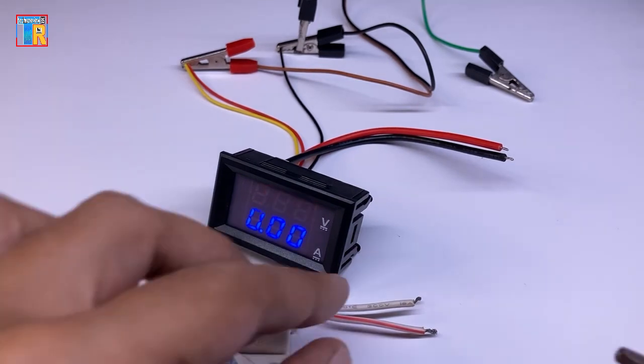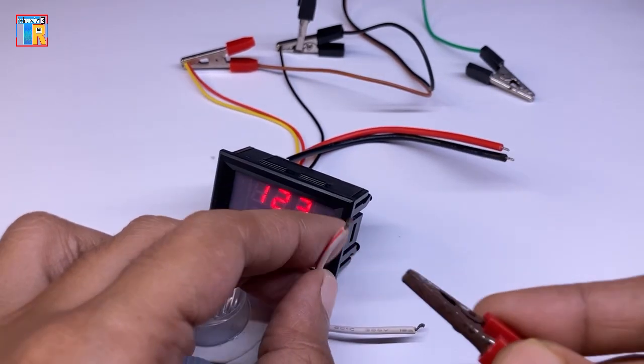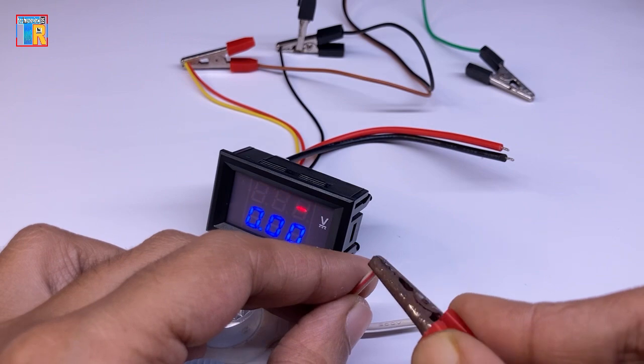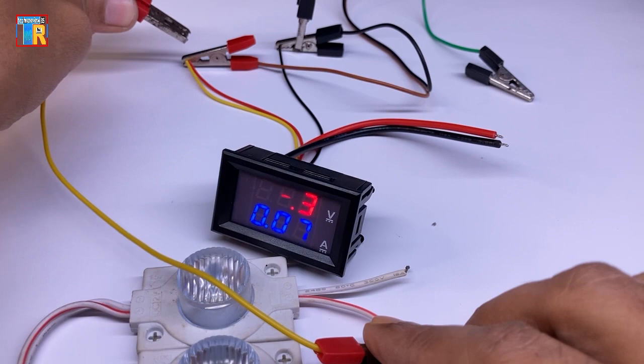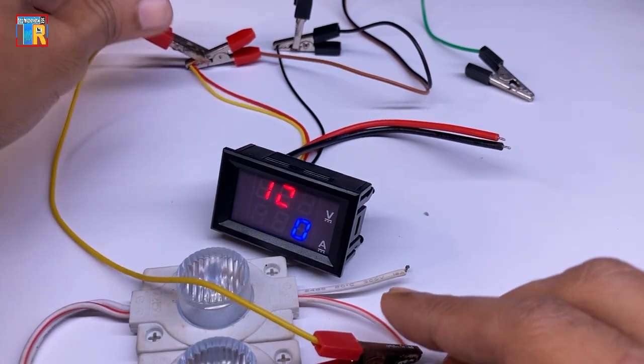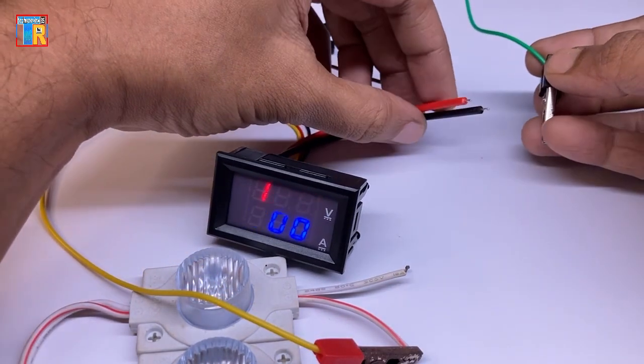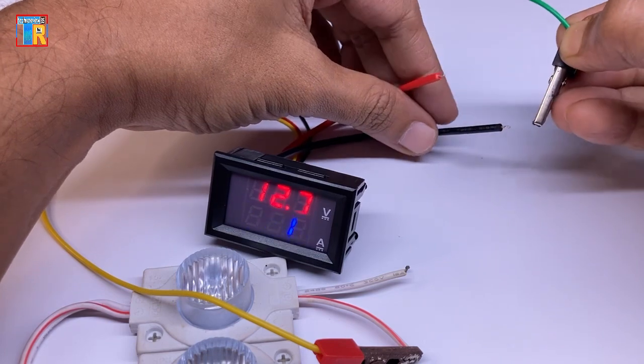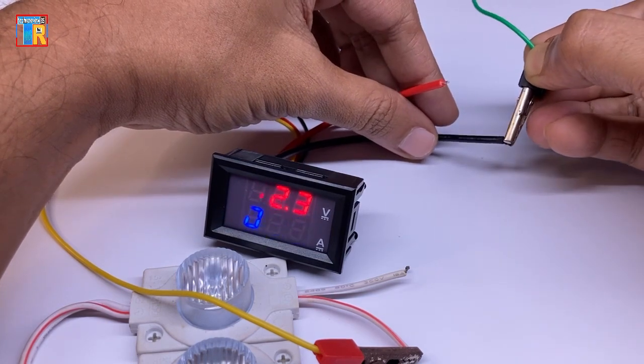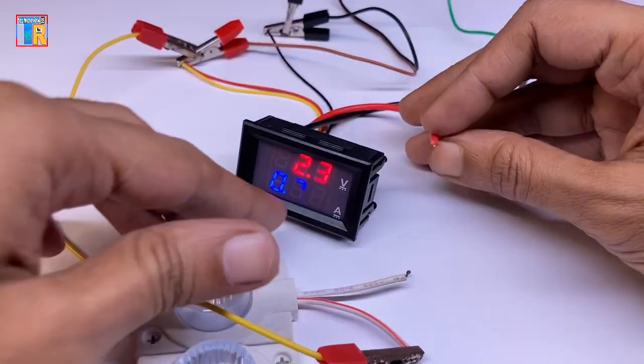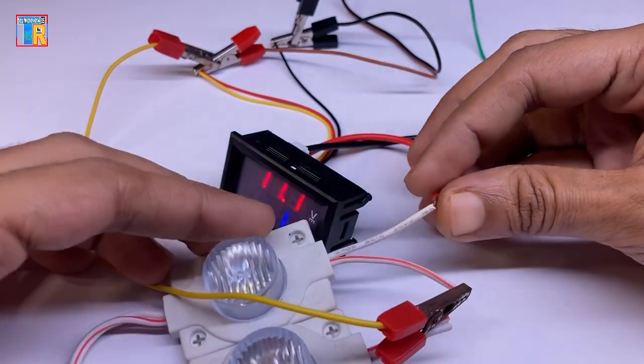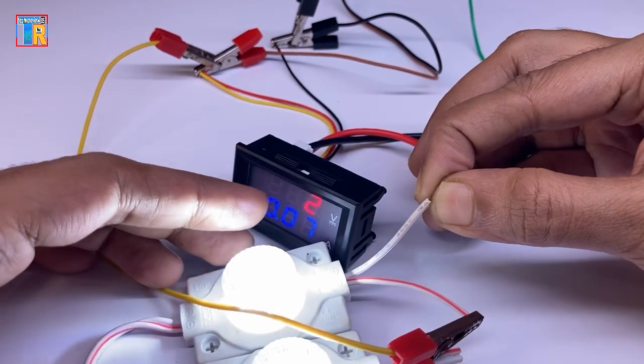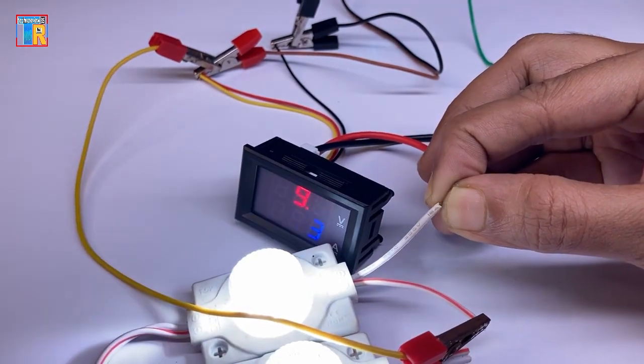Connect the positive terminal of the LED to the positive input of the DC voltage source. Connect the thick black wire to the negative input of the voltage source. Attach the red wire to the negative terminal of the LED. This LED draws about 0.13 Ampere.